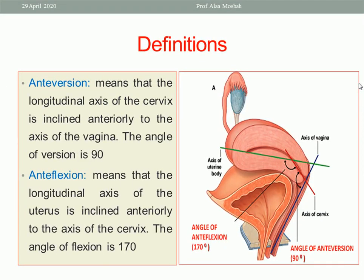Let's start — what is meant by anteversion and anteflexion? Please look at this picture. Look at the longitudinal axis of the cervix and the longitudinal axis of the vagina. This is the anteversion of the uterus — it means that the longitudinal axis of the cervix is inclined anteriorly to the axis of the vagina, and this angle is about 90 degrees. This angle is the angle of anteversion.